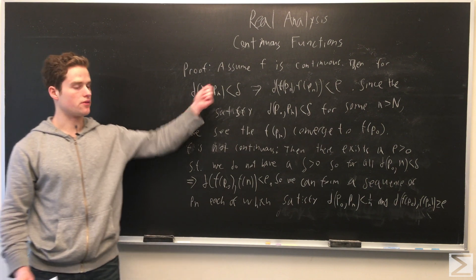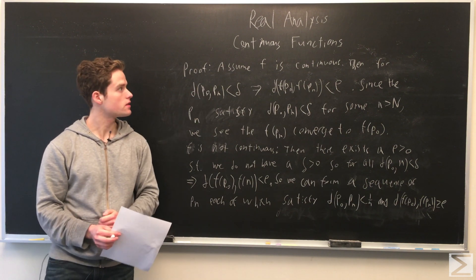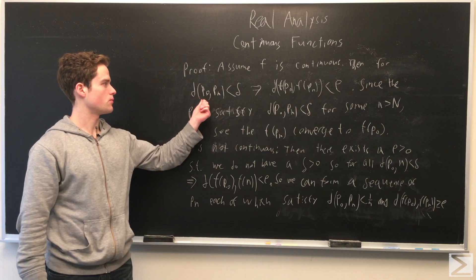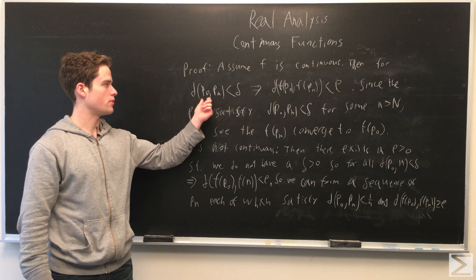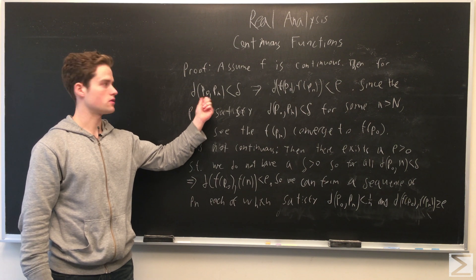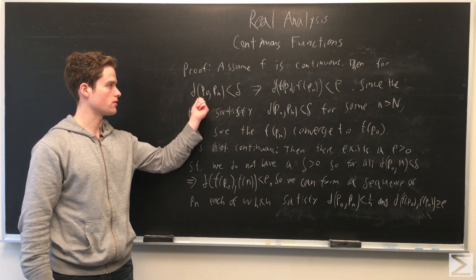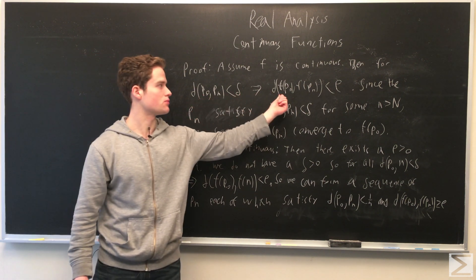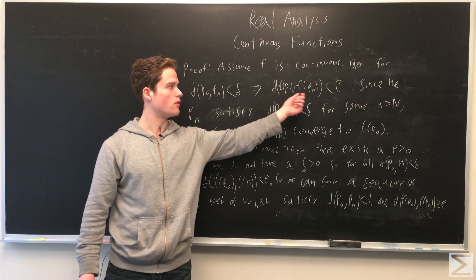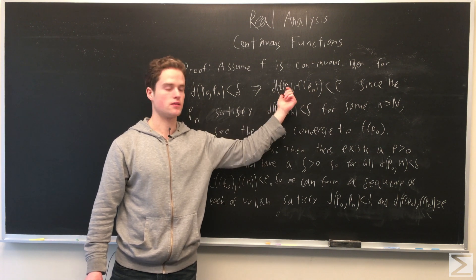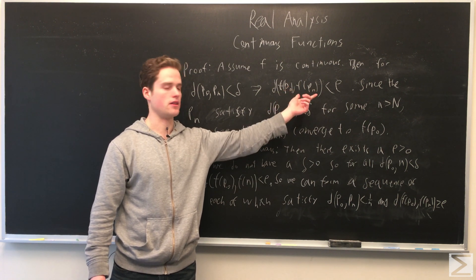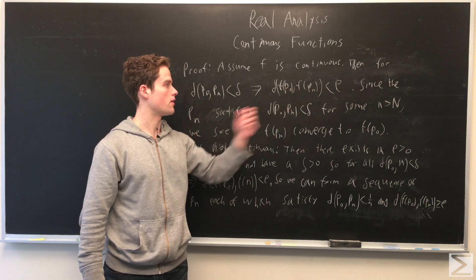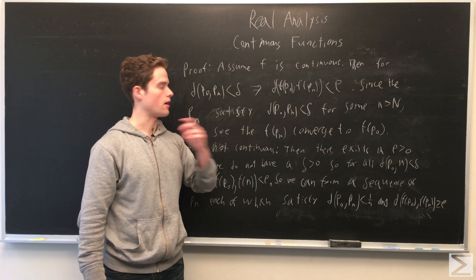First, assume F is continuous. This implies that if P and P_N are close enough — less than some delta away from each other — then the distance between F of P0 and F of P_N will be less than some epsilon, where epsilon is arbitrary and given prior.